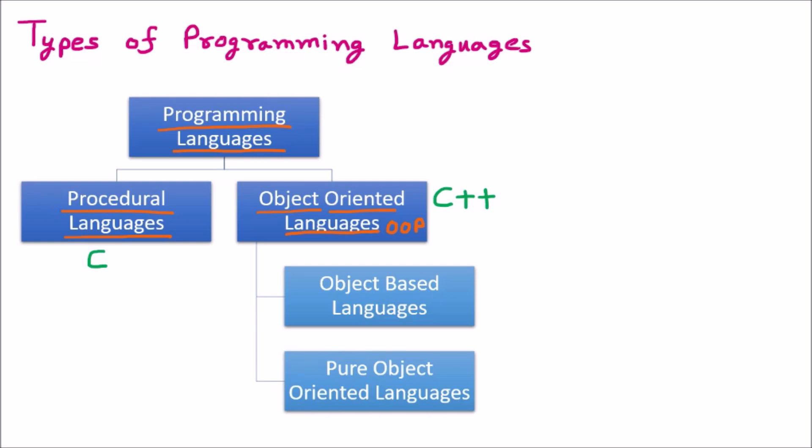With C++, we can work with real-life concepts. To understand what that means, we should first know the main features that make a language object-oriented. There are four features which make any language object-oriented. The first feature is called abstraction.